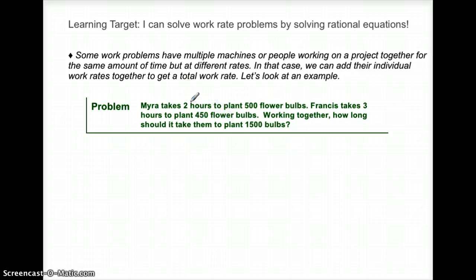Here's an example of that. Myra takes two hours to plant 500 flower bulbs. Francis takes three hours to plant 450 flower bulbs. Working together, how long should it take them to plant 1500 bulbs?